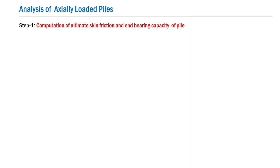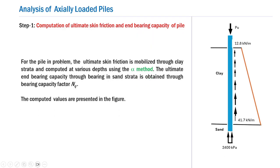The analysis of axially loaded piles through ETABS should cover the following essential topics. Step one is the computation of ultimate skin friction and end bearing capacity of the pile. Please remember that there are many methods available in the literature, and you can select the best one for your project. For the given pile in the problem, the ultimate skin friction mobilized through the clay strata is computed at various depths using the alpha method. Other methods like the beta method and the gamma method are also available.